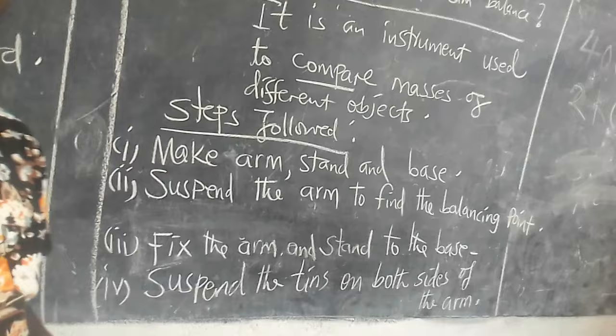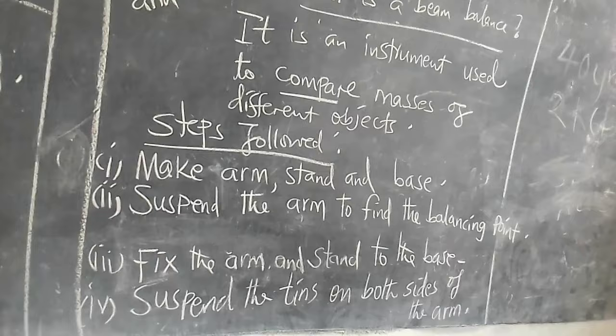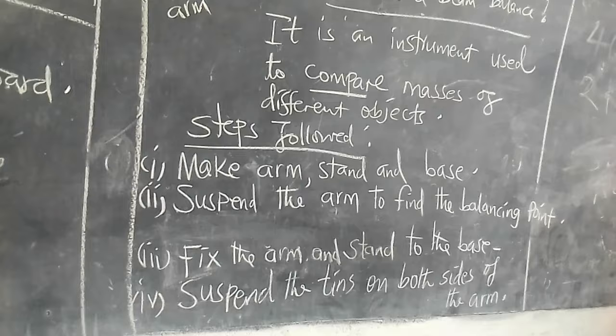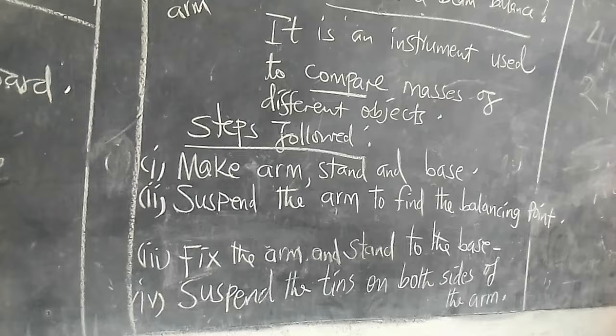I repeat, steps followed when making a beam balance: make arm stand at the base; suspend the arm to find the balancing point; fix the arm and stand to the base; four, suspend the tins on both sides of the arm.